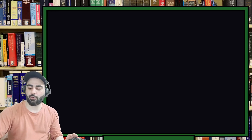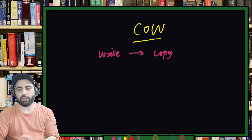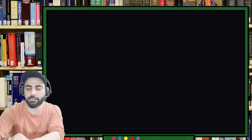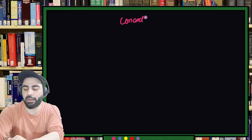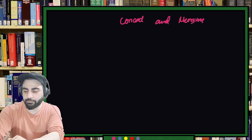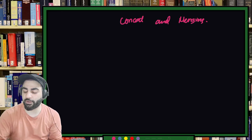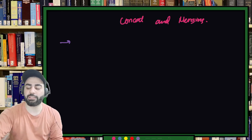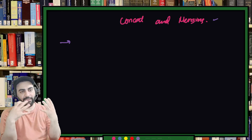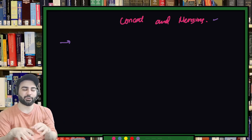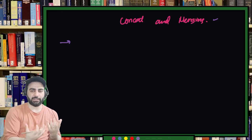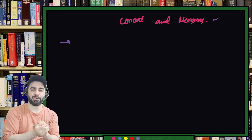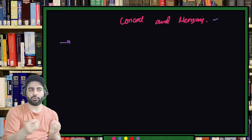After introducing COW, we'll move on to the next topic: how to join and concatenate data frames. The fundamental objects are data frames and series. The topic is concatenating and merging. You should see every problem as existing in the real world first — pandas and other libraries create solutions for those real-world problems.